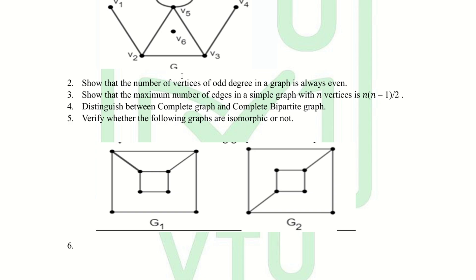The second question is: show that the number of vertices of odd degree in a graph is always even. The third question is: show that the maximum number of edges in a simple graph with n vertices is n(n−1)/2.